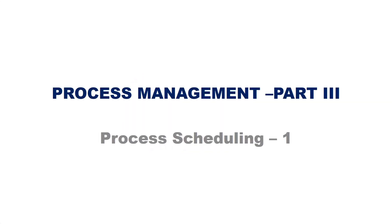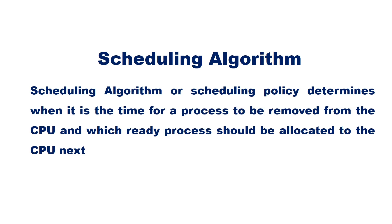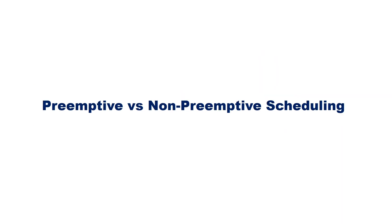In this video, let us discuss various process scheduling algorithms. In the previous video we saw that the scheduling algorithm or scheduling policy determines when it is time for a process to be removed from the CPU and which ready process should be allocated the CPU next. There are two types of scheduling algorithms: preemptive scheduling and non-preemptive scheduling.